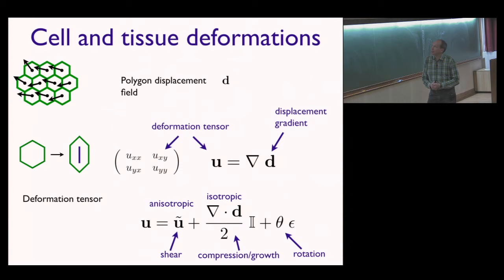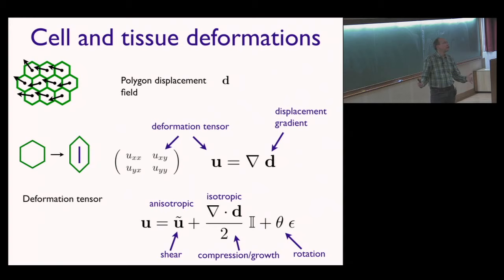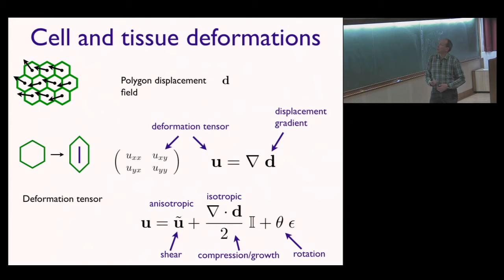This conjugate network turns out to be very useful. The first step was to define the deformation tensor, which I can coarse-grain on different scales: on the scale of a single polygon or triangle, on the scale of regions of the tissue, or on the scale of the whole tissue. The deformation tensor is a displacement gradient, coarse-grained — meaning averaged over a certain region. In two dimensions, this is a two-by-two matrix, and we need to decompose it into its essential components.